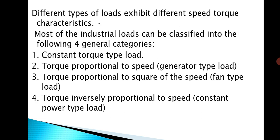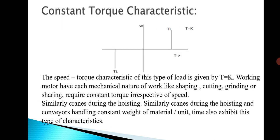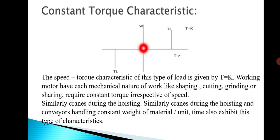The first is constant torque characteristics. The speed-torque characteristics of this type of load is given by T equal to K. You can see that the torque is always constant with varying speed — torque versus speed is constant. When the speed is varying, the torque will always be constant. Working motors with mechanical operations like shaping, cutting, grinding, or shearing require constant torque irrespective of speed.